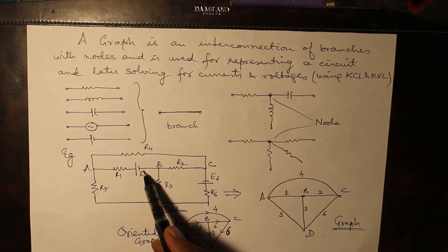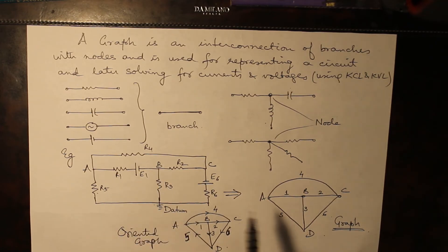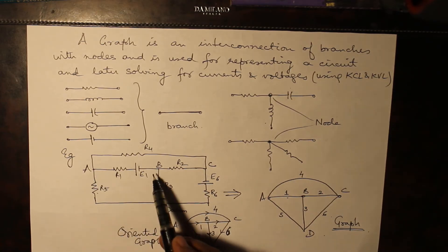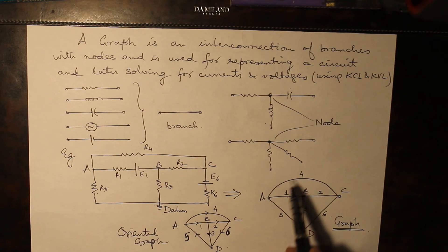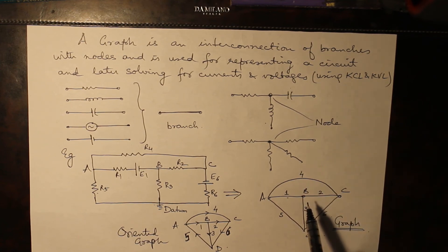Resistance and the voltage source are together considered as one branch in both the cases - in the case of CD and in case of AB. And all other branches have been named according to the resistance names: R1, R2, R3, R4, R5 and R6.